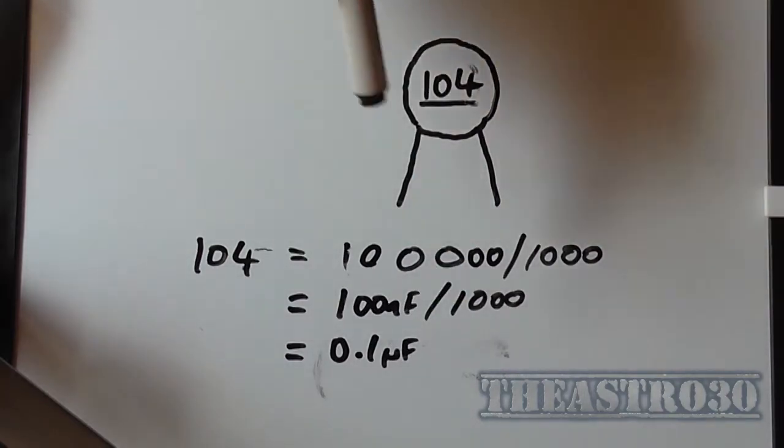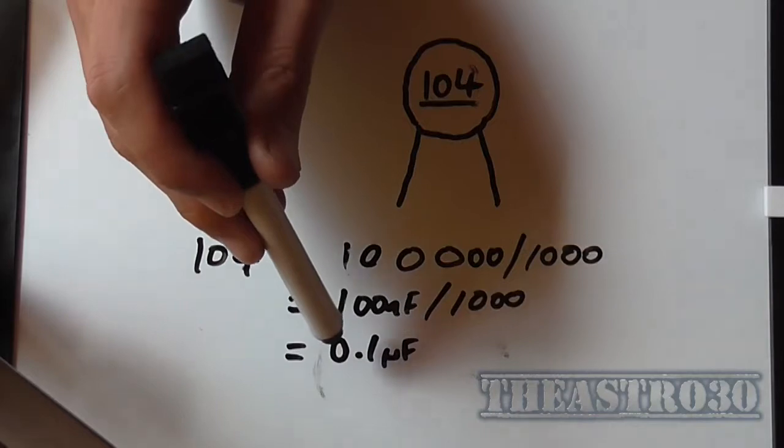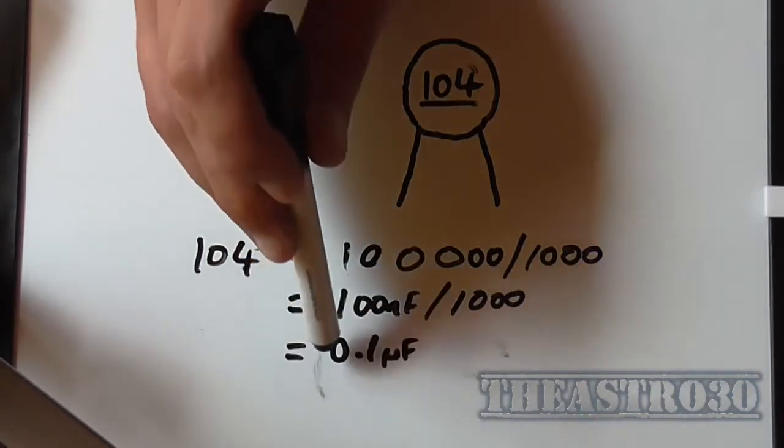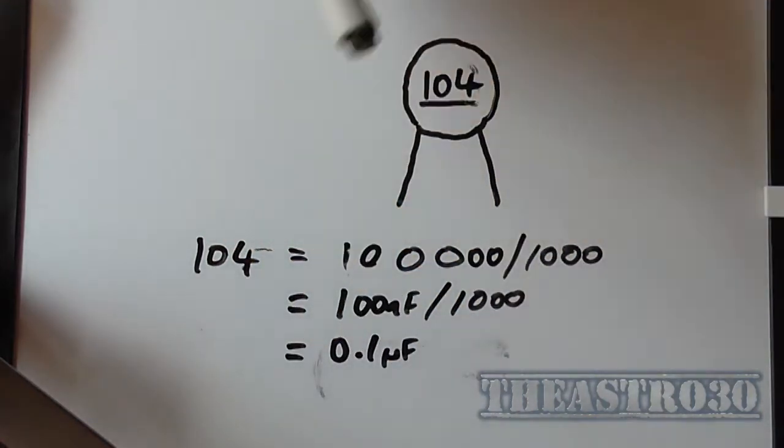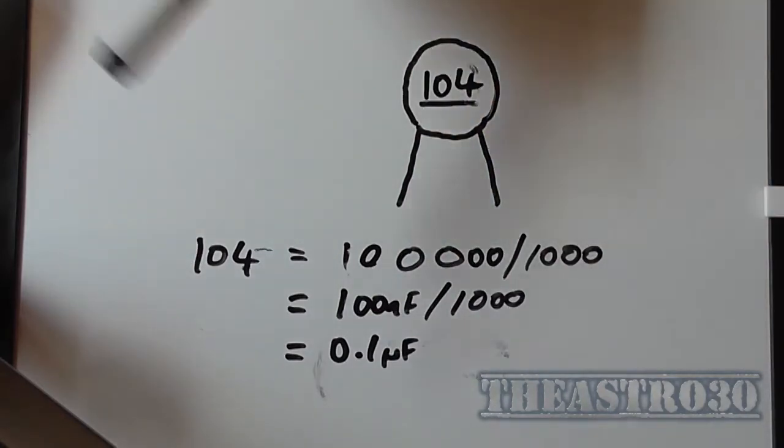So you can use this code to work out what the capacitance is, either in nanofarads or microfarads. And it will work the reverse way too. If you want to find out what 0.1 microfarad is in nanofarad, you times that by a thousand, comes out as 100 nanofarad.